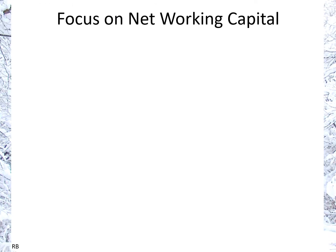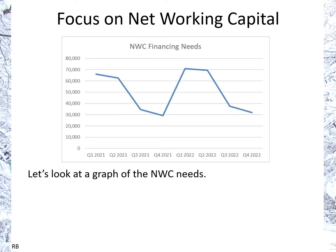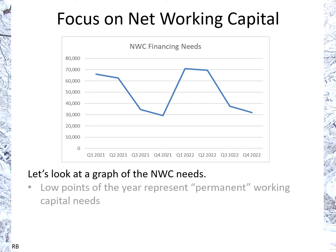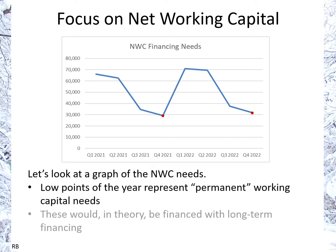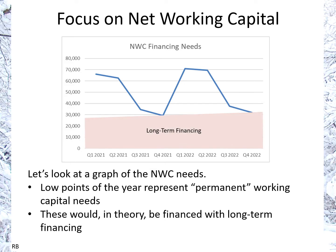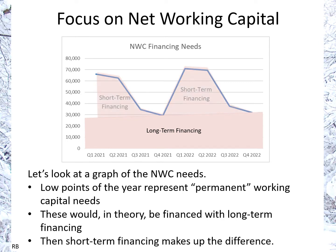Looking at the net working capital itself, let's examine a graph of net working capital needs on a quarterly basis. From one quarter to the next, you can see a seasonal pattern, and there should be a trend that grows year to year. The low periods represent permanent working capital needs covered with long-term financing, and the remainder above that is covered by short-term financing.